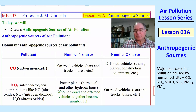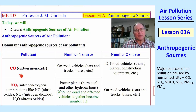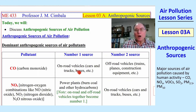I have a table here. I just want to point to some of these things, and you can read through this yourself. Some of the pollutants — carbon monoxide, CO — the number one source is on-road vehicles. That just means cars, trucks, buses.